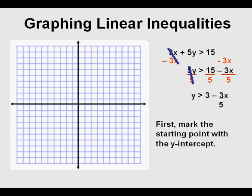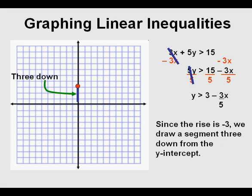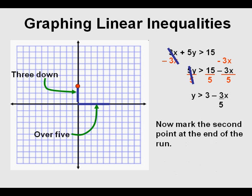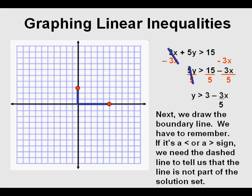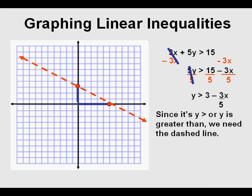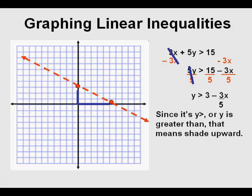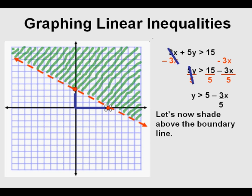We start with the y-intercept, which is 3 — draw a dot there. We use the slope to form the boundary line. We have negative three-fifths, so our rise is negative 3 — go 3 down from that y-intercept — and our run is 5, so we draw a line segment to the right 5 and mark our second point. We draw the boundary line. Since it's y is greater than, we use a dashed line. Since y is greater than means up, we shade upward.